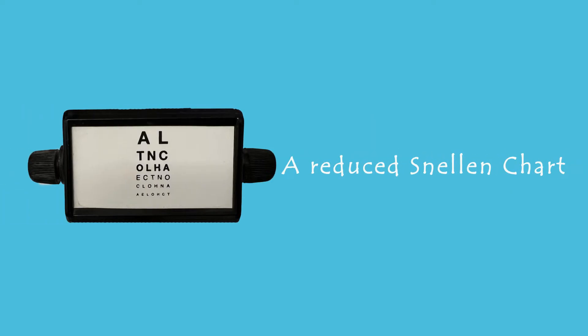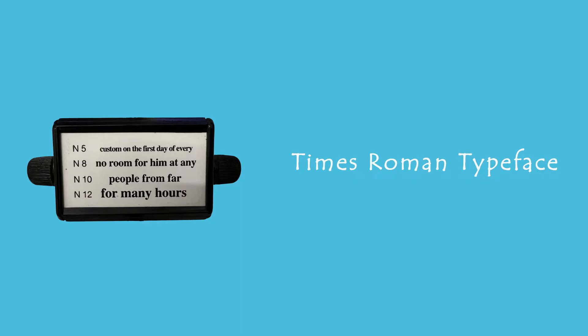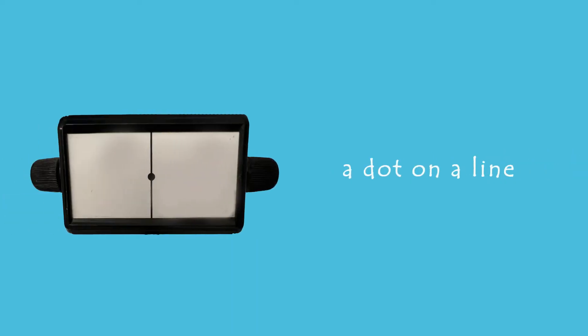Side 1, a reduced Snellen chart. Side 2, a section of general post office telephone directory. Side 3, Times Roman typeface. Side 4, a dot on a line.